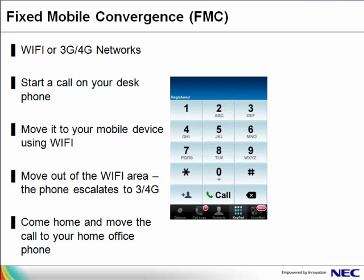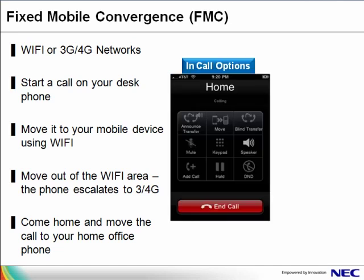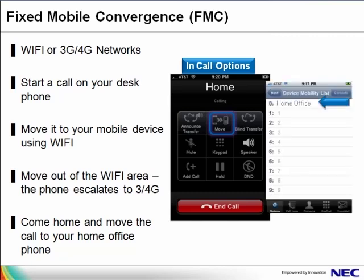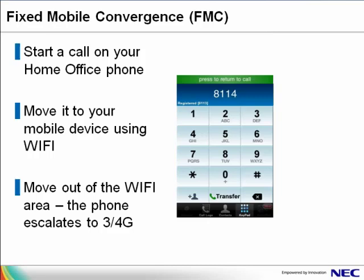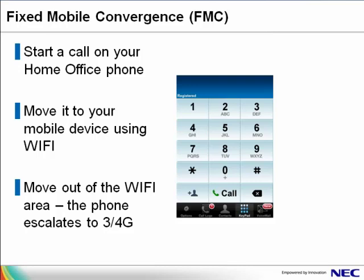With U-Mobility, you can move a call from your mobile phone to another number or device via the device mobility list. For example, you're driving home and receive a call with U-Mobility on your mobile phone. Your screen changes to in-call options. When you get home, you want to move the call without redialing to your home office phone. You move your call by pressing the Move button on the in-call options menu while in an active call, and select the move location from the device mobility list. The call is seamlessly moved without the other party noticing. Once the call is moved, U-Mobility still has the capability to control the call — you can retrieve your call and place it back on your mobile phone. If you want to leave the house and take the call with you, tap on the Press to return to call icon at the top of the U-Mobility client, and the call is moved from your home office phone to your mobile phone without interrupting your conversation.